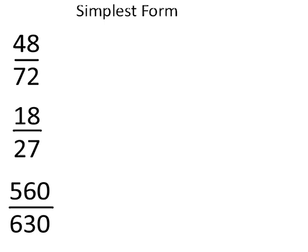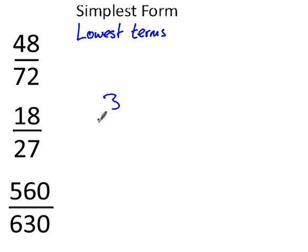Simplest form — you might also see this written as 'simplest form' or 'lowest terms.' If it says reduce a fraction to its lowest terms, that's the same as asking you to write the fraction in its simplest form. So you might be asked to add three quarters plus six eighths and write the fraction in its simplest form.